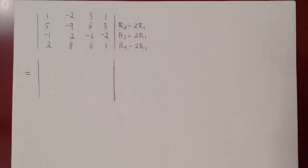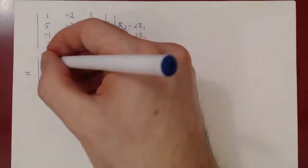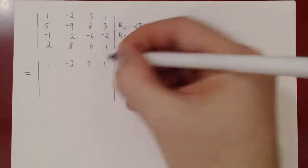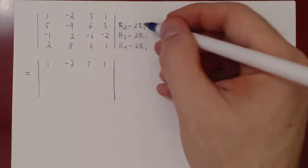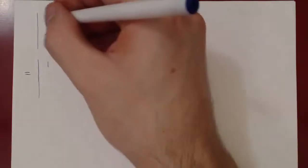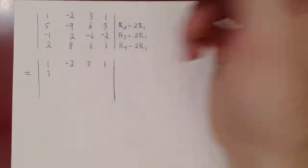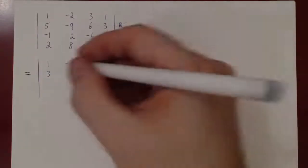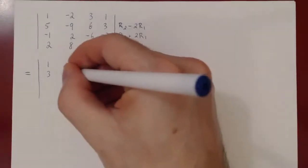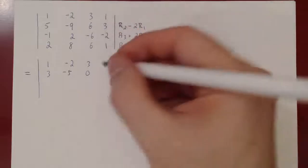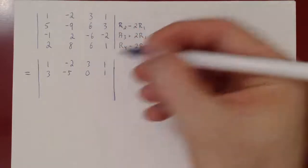Recopying the first row unchanged: 1, negative 2, 3, 1. For row 2 minus 2 row 1: 5 minus 2 is 3; negative 9 minus 2 times negative 2 is negative 9 plus 4, giving negative 5; 6 minus 2 times 3 is 0; and 3 minus 2 times 1 is positive 1.